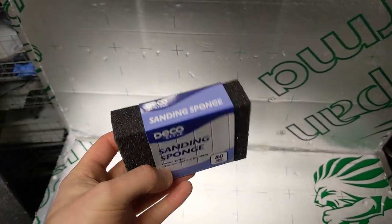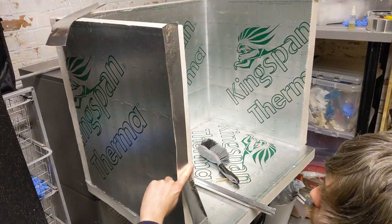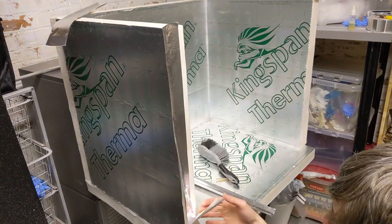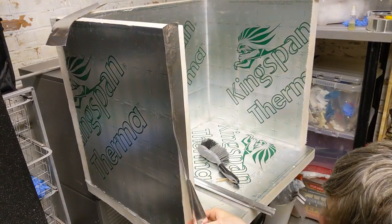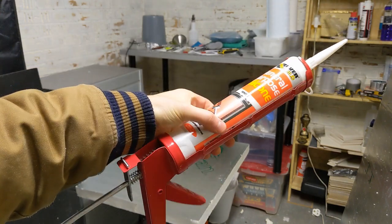Once we have all of our panels, we can clean up any rough edges using a sanding block like this. We will be taping up the edges with foil later, so having a smooth finish will help at that stage.